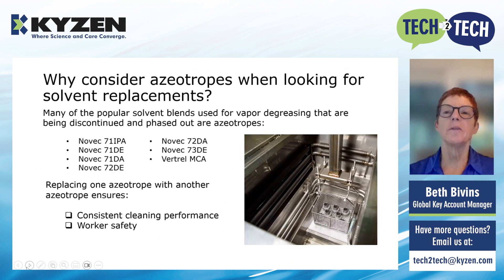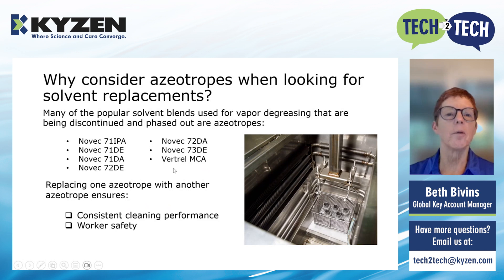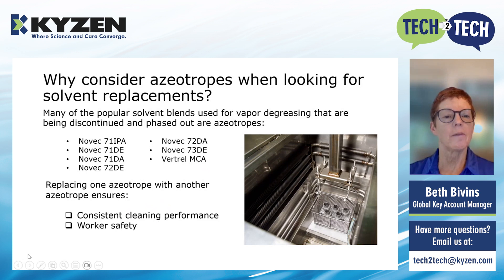So why consider azeotropes when looking for solvent replacements? Many solvent blends used today that are being discontinued and phased out are azeotropes — such as the various NOVEC 71 IPA, DE, DA, 72 DENDA, 73 DE, and Vertrel MCA. If you're currently using an azeotrope, it's important to replace it with another azeotrope to ensure the same cleaning performance and the same worker safety.